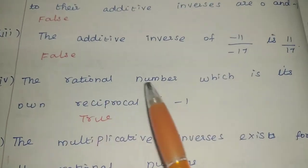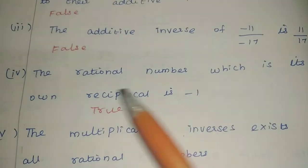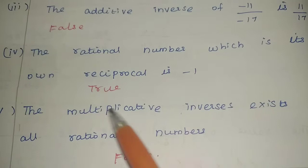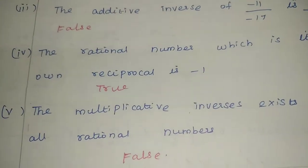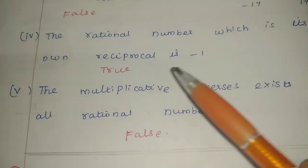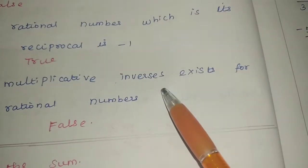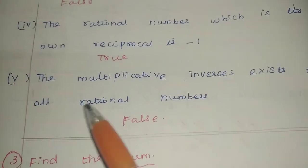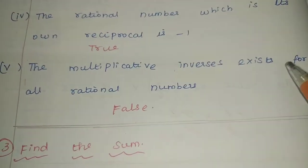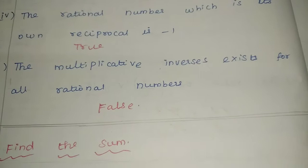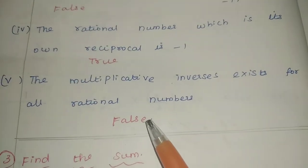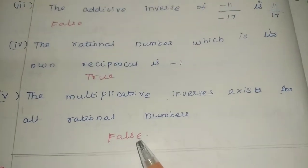Fourth one: the rational number which is its own reciprocal is minus 1. Yes, in minus 1 the reciprocal panel gives minus 1 in a row. The statement is true. Fifth one: the multiplicative inverse exists for all rational numbers. Because the inverse does not exist for 0, the statement is wrong. The answer is false.